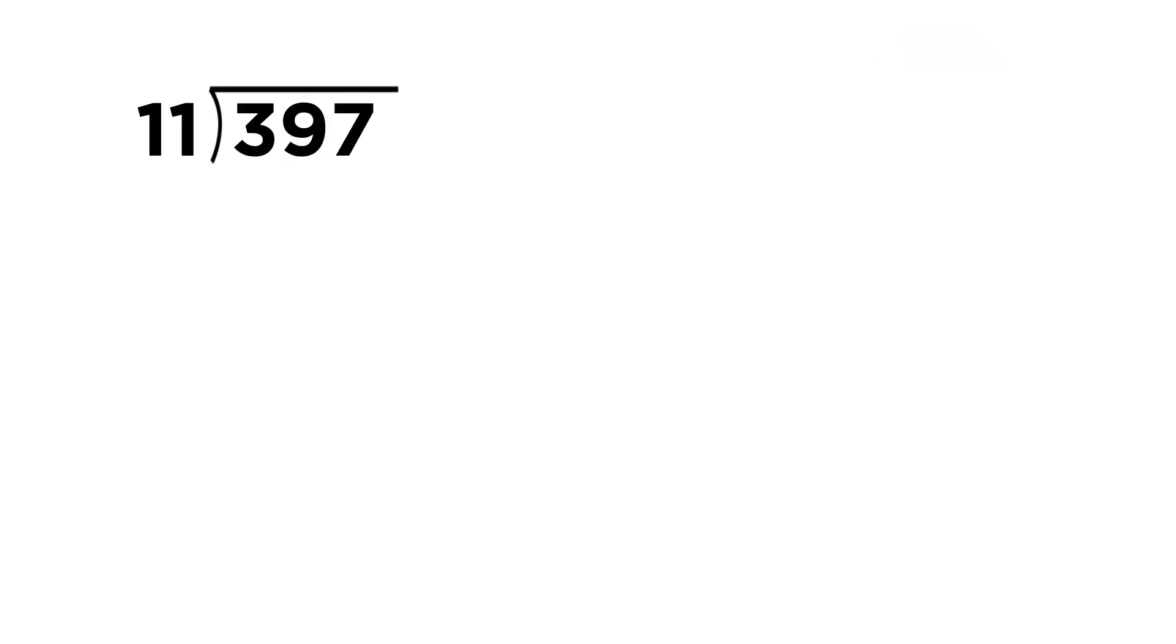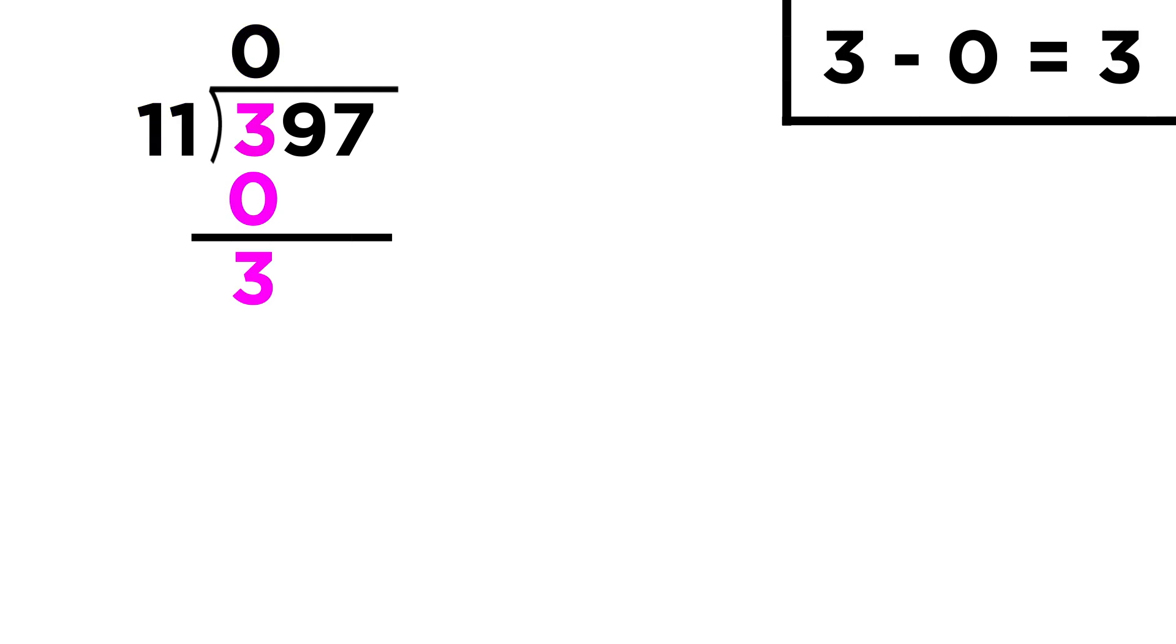Let's try one more for practice. Three hundred ninety-seven divided by eleven. This time we have to divide by a two-digit number. Eleven doesn't fit into three, so let's put a zero, get a zero down here, which leaves us with three, then we bring down the nine.